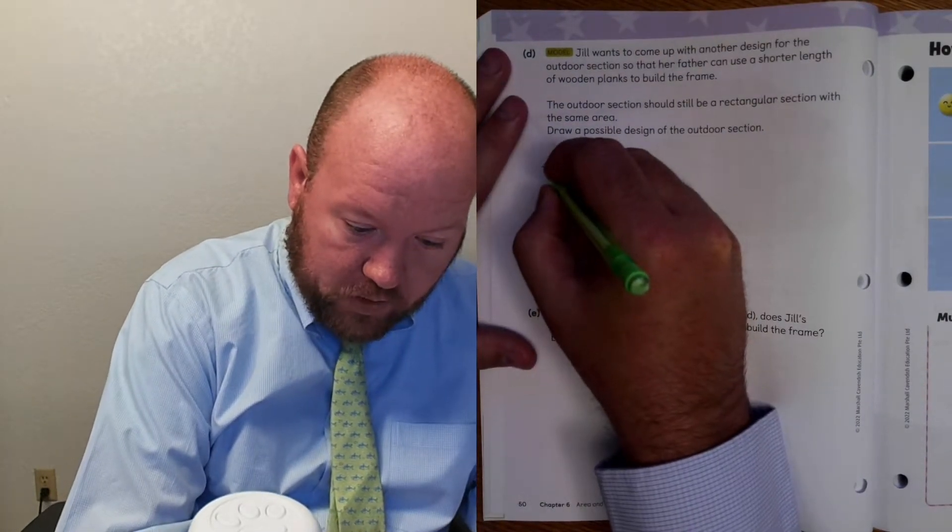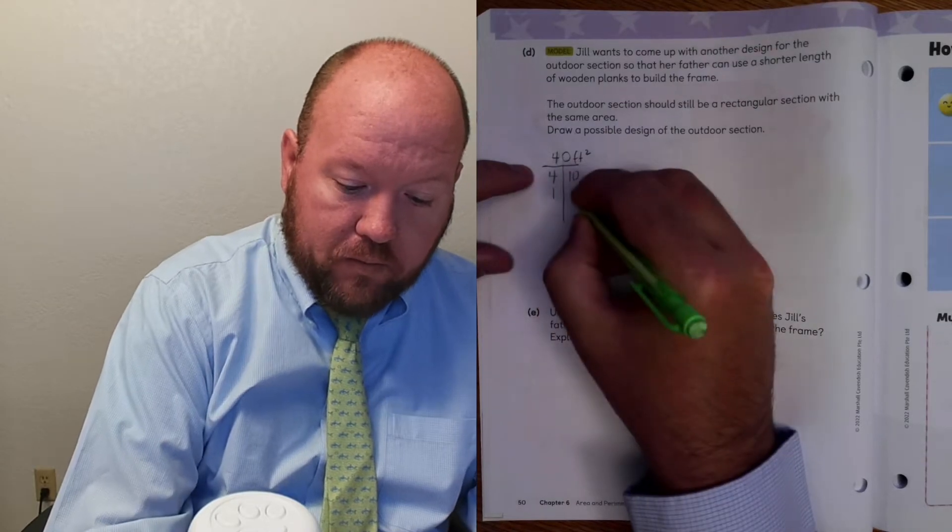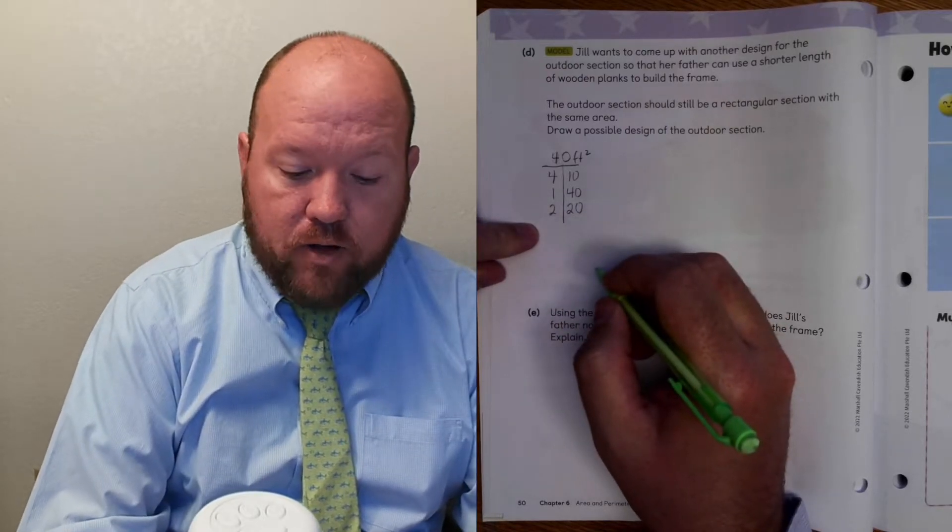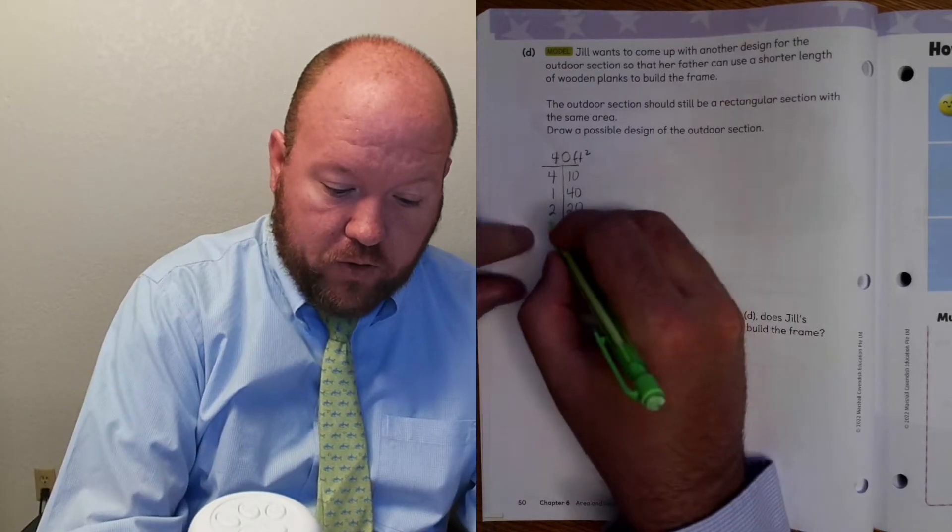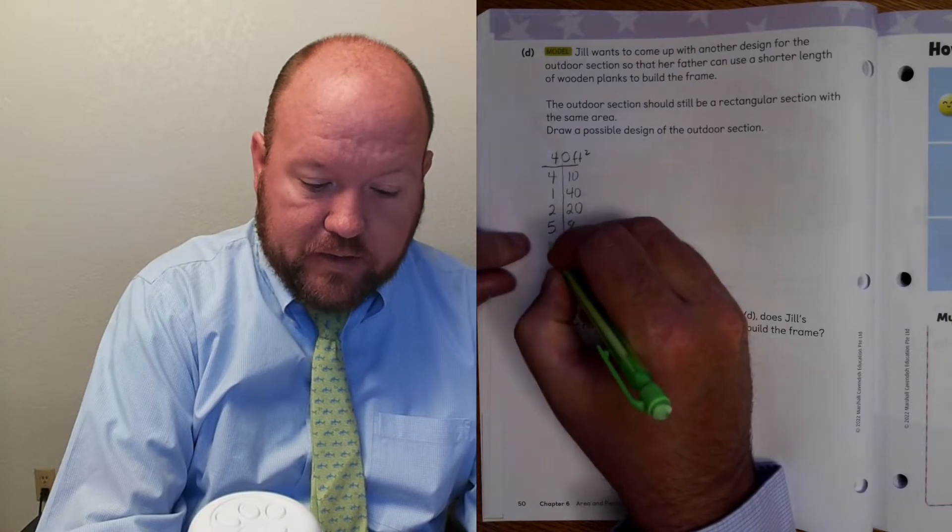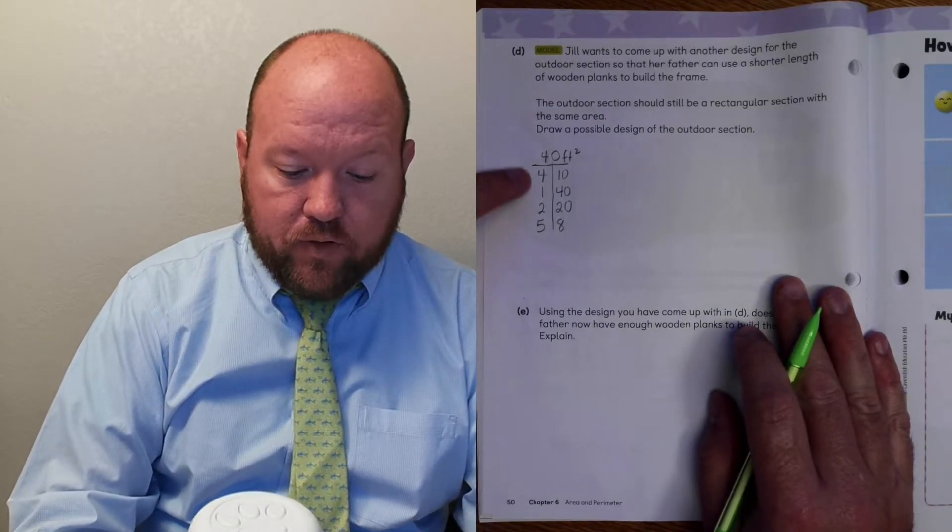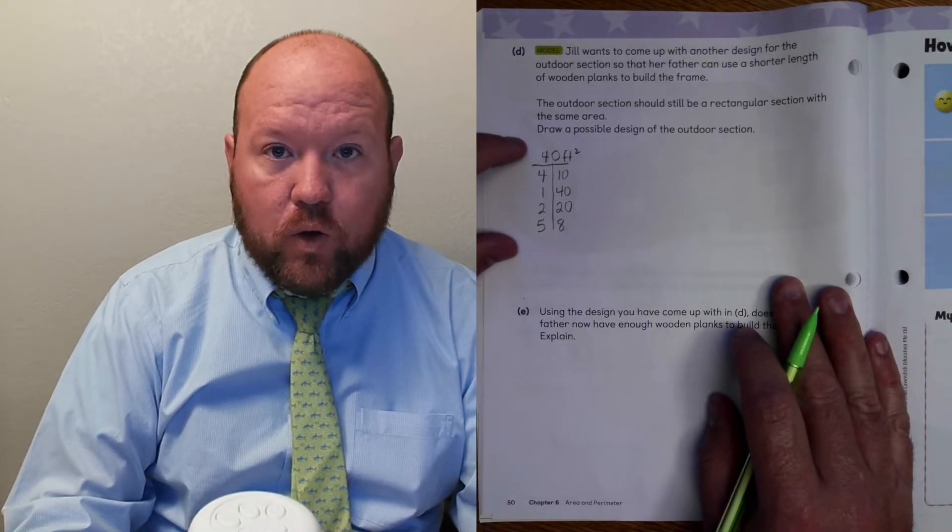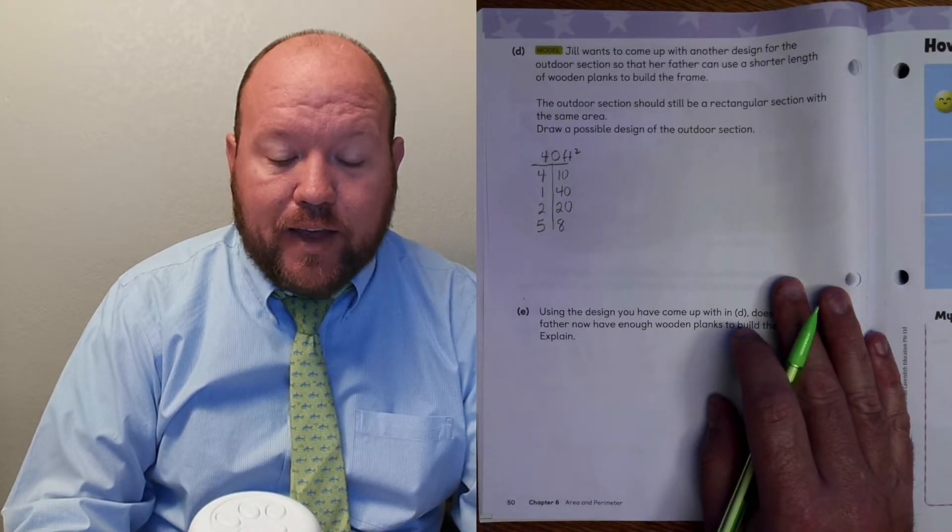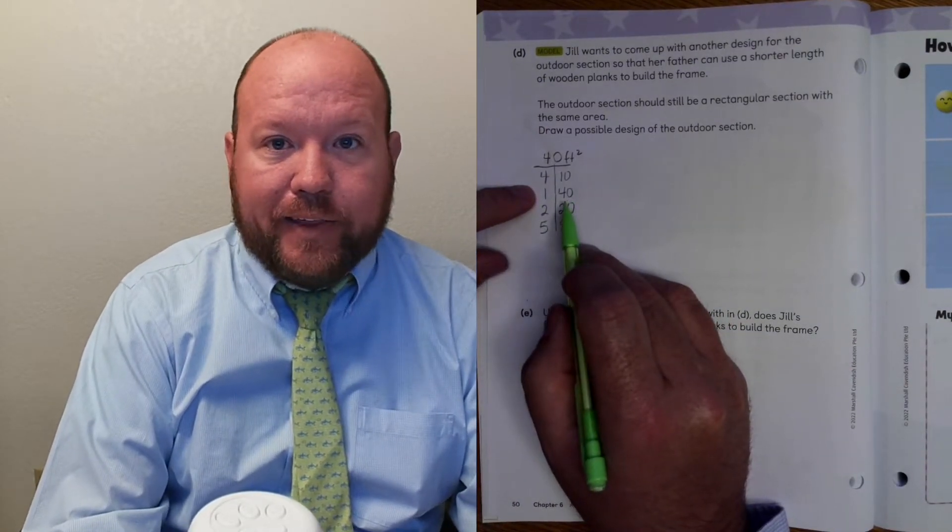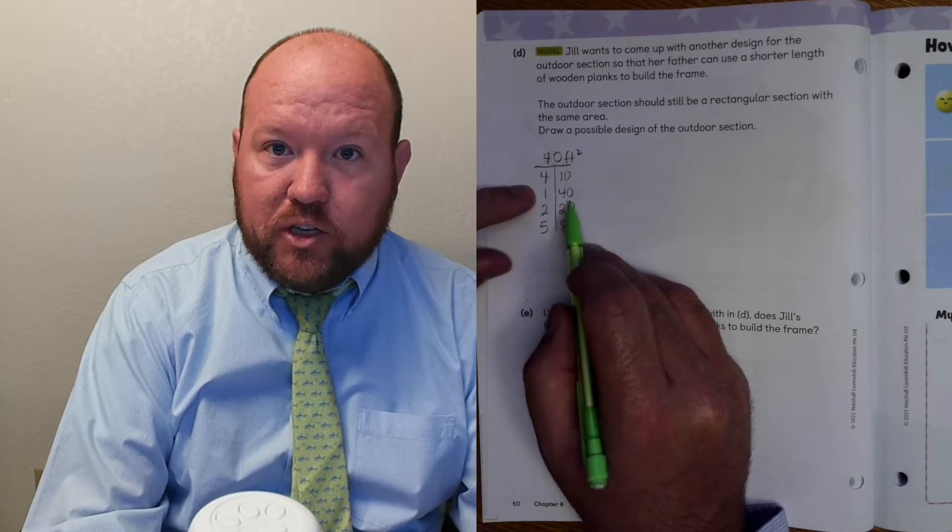So what can we multiply together? So we know that 4 times 10 works. We could do a 1 by 40. A 2 by 20. Can't multiply by 3. I already did 4. We could do a 5. 5 times what is 40? 5 times 8. 6 and 7 don't work. So, all of these equal 40 square feet.